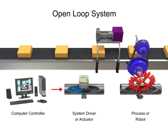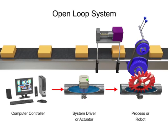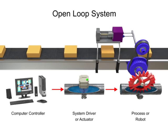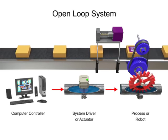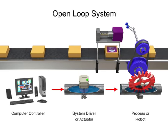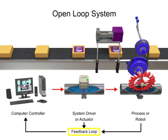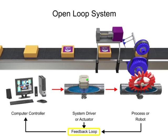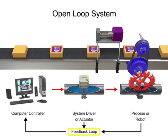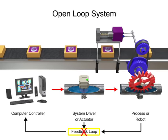Once the signal is received, the robot performs the appropriate action. In an open-loop system, the signals that go from the computer to the system driver to the robot are never checked with a feedback loop to ensure that the robot has completed its task.